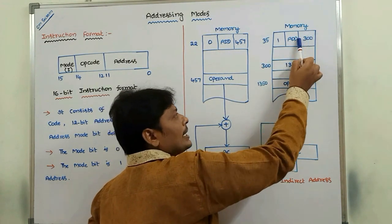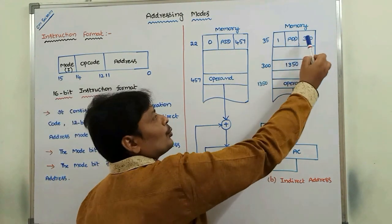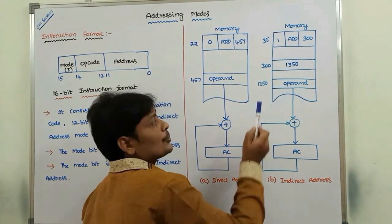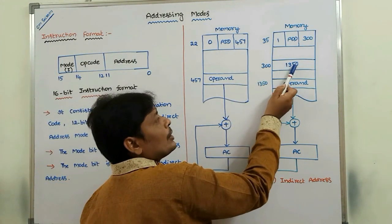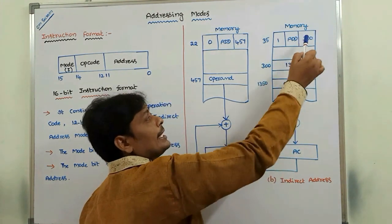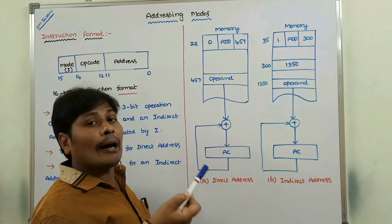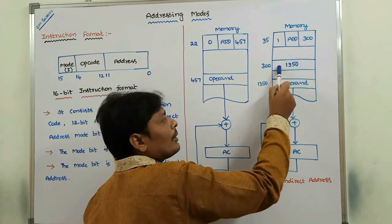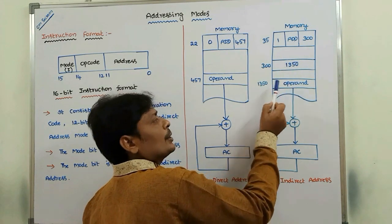In indirect addressing, we do not directly get the address of the operand. First, we go to the address in the instruction's address part. In that address, the address of the operand is stored — for example, 1350 is the address of the operand. So 1350 is stored at address 300. Address 300 is in the address part of the instruction. It is not the address of the operand itself; it is an indirect address. We go to address 300, find address 1350, then go to 1350 to get the operand.